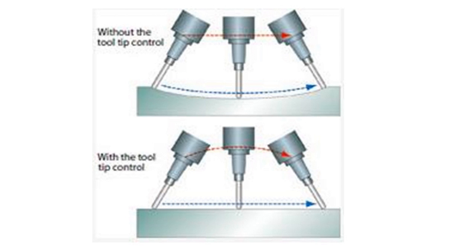If you look at the image on the bottom of those two pictures, we have the same movement, although toolpath linearization has been turned on.